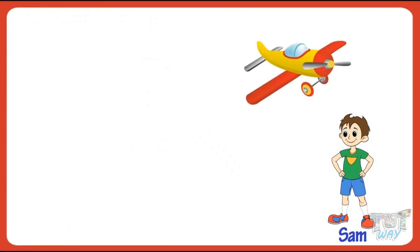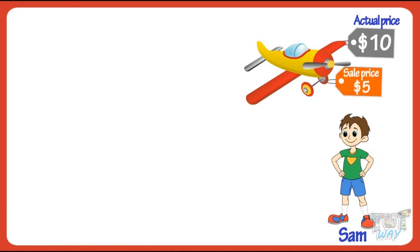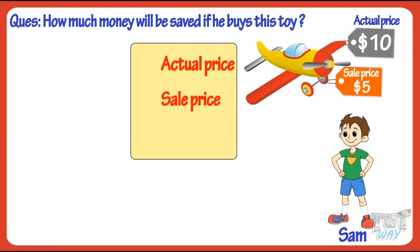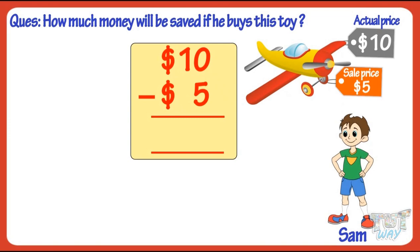Let's take another example. Sam goes shopping and chooses an airplane to buy. It's on sale — earlier it was for ten dollars, but now it is for five dollars. So how much money will be saved? You have to find the difference between the actual price and the sale price: 10 dollars minus 5 dollars. This is a difference of five dollars.